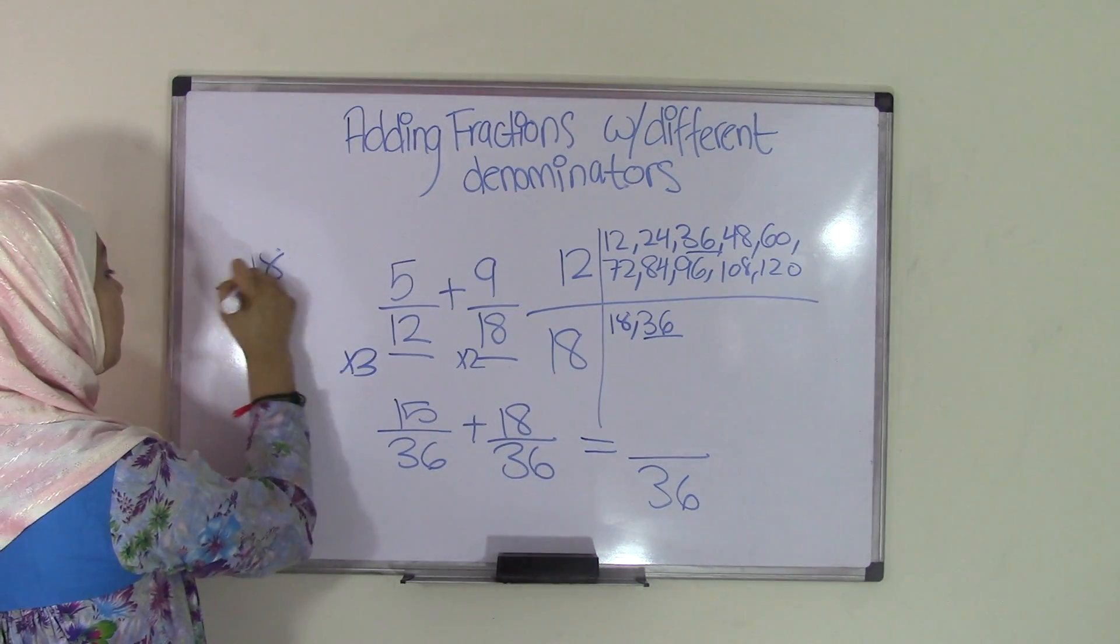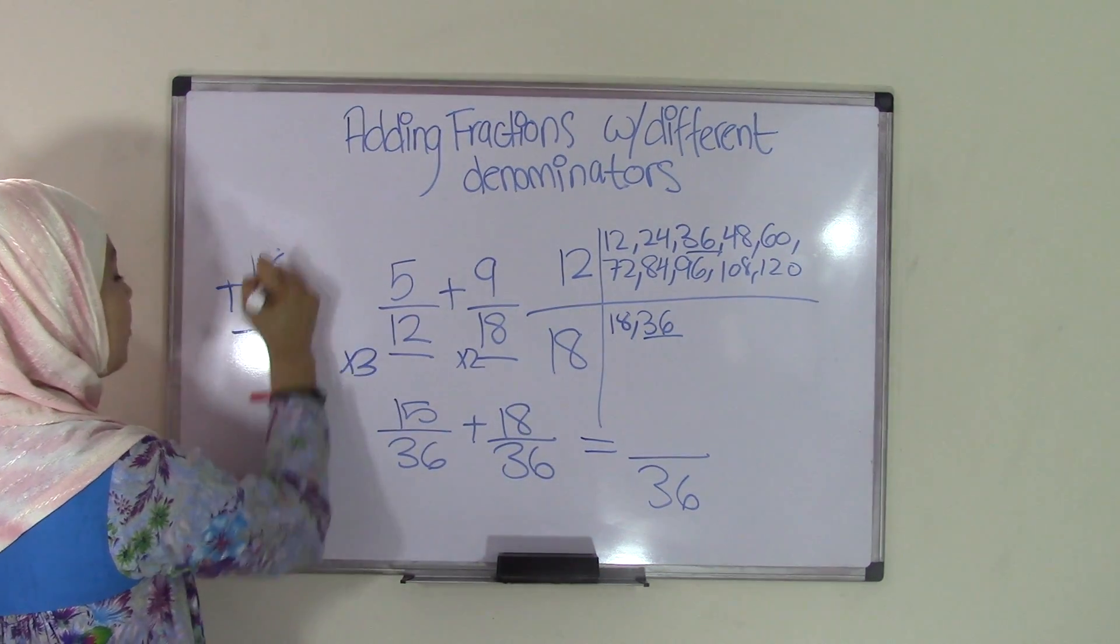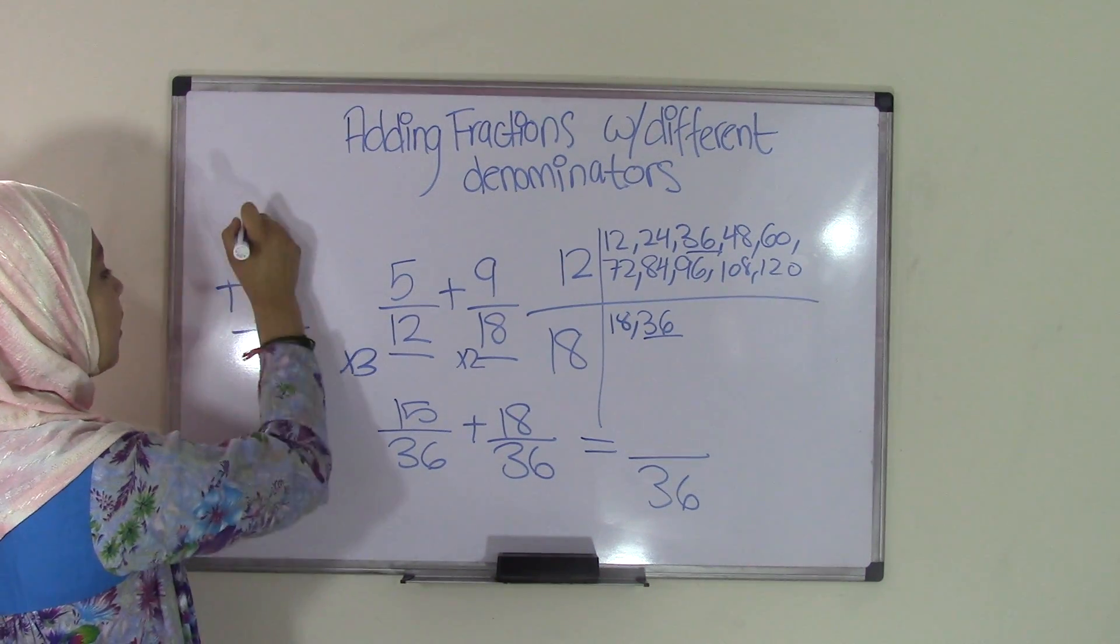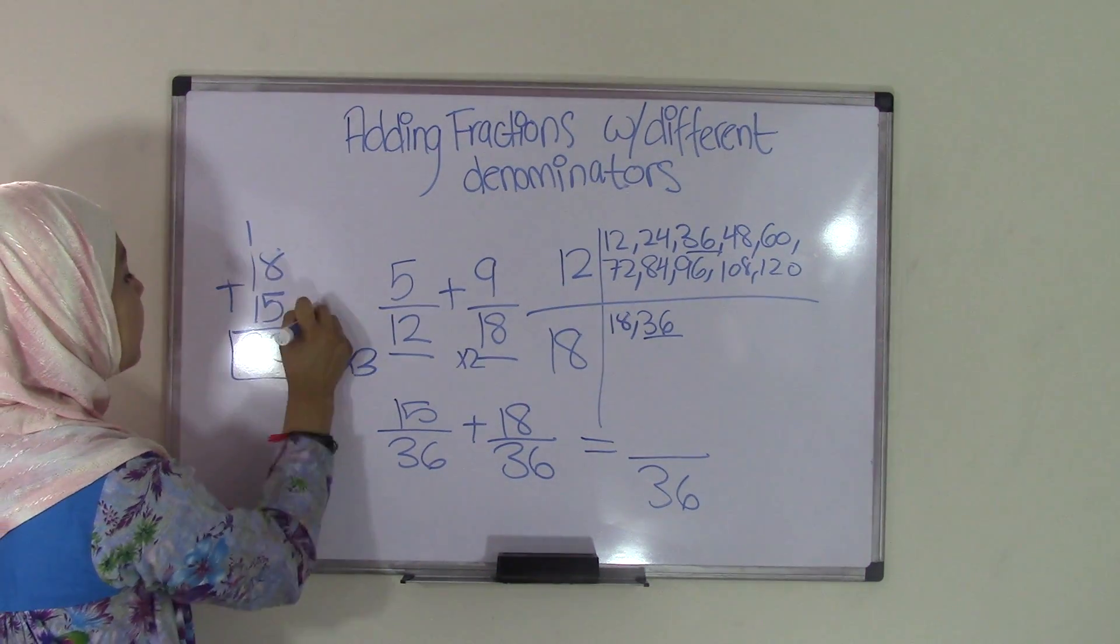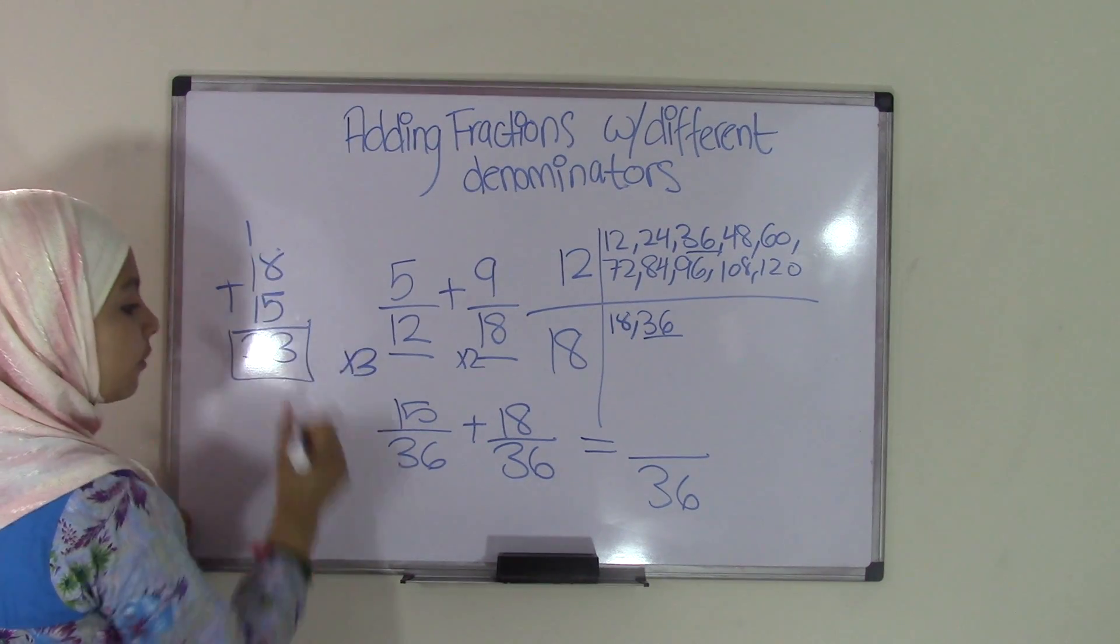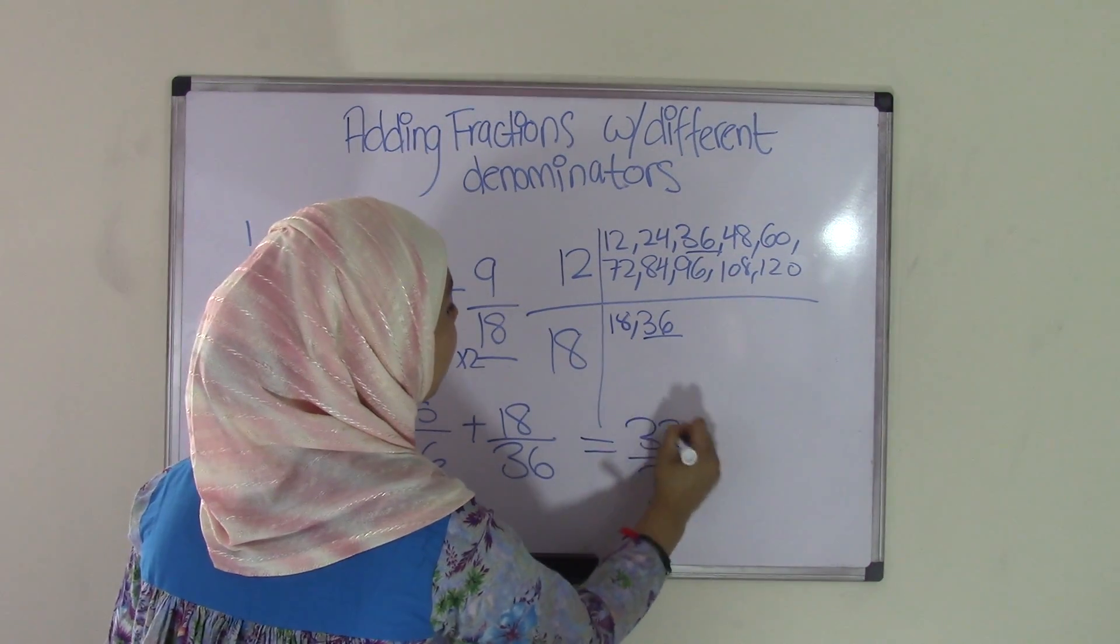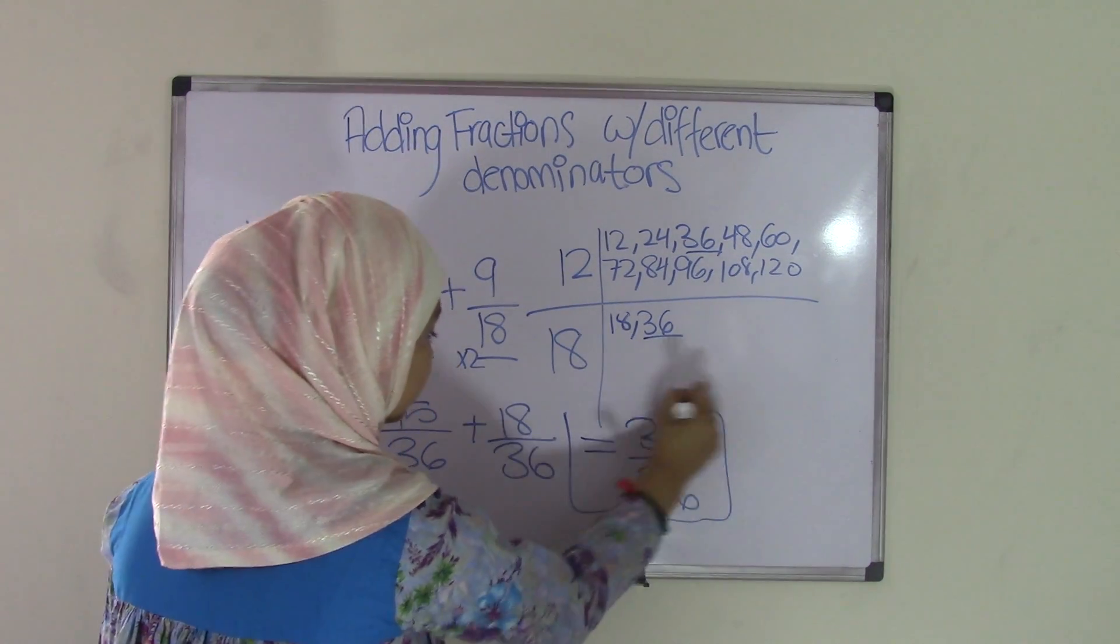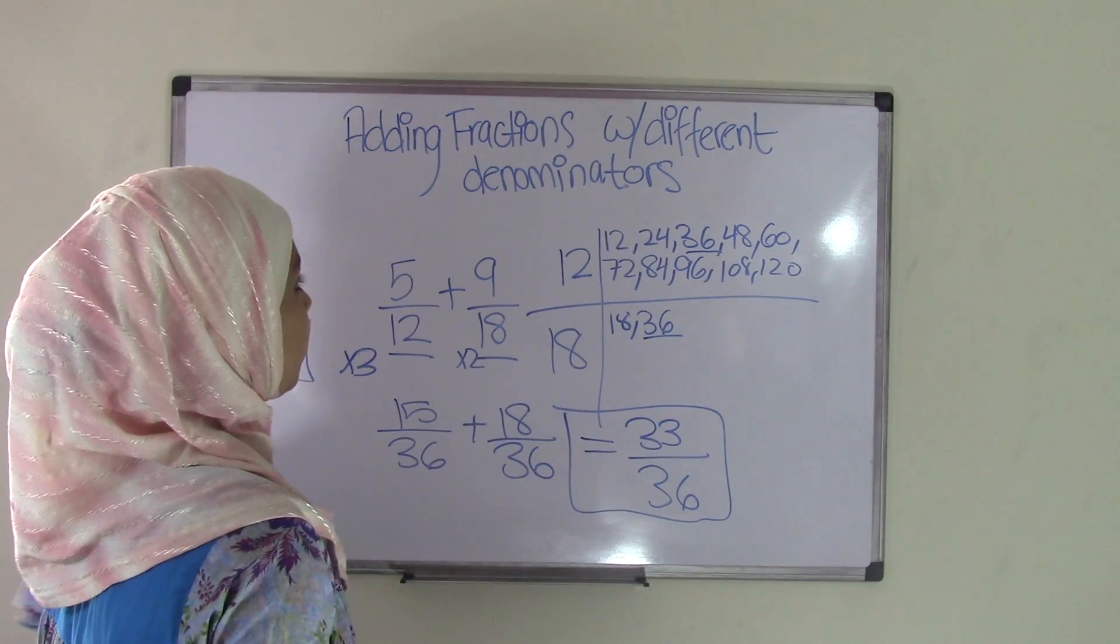So over here, 8 plus 5 is 13, carry the 1, and then 1 plus 1 is 2 plus 1 is 3. That means the sum of 18 and 15 is 33. Come over here, write that, and we have our final answer: 33/36.